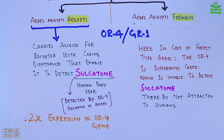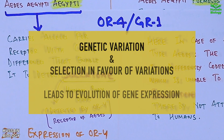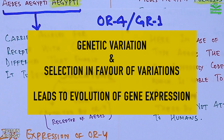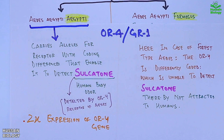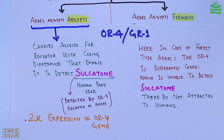So the difference in gene expression within the same species shows us genetic variation and selection in favor of variations. To support this concept, we have the following graph on the screen.